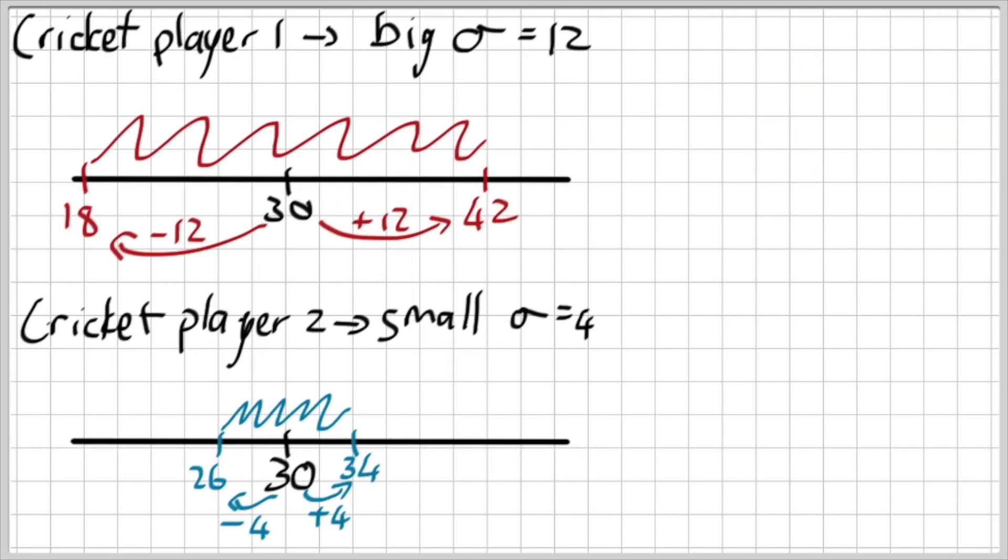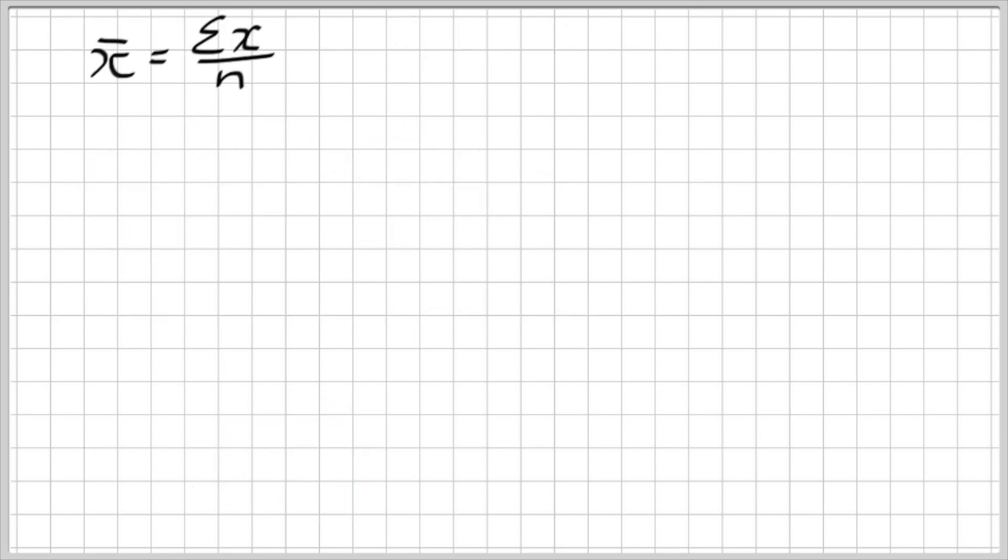We spoke about this cricket player where a cricket player with a large standard deviation is more erratic, but the person with a small sigma or small standard deviation has a more consistent performance. Not one is better than the other; it depends on what you're looking for in your team. Standard deviation is about the mean, so I've got to first of all talk about the mean.